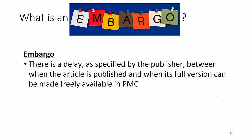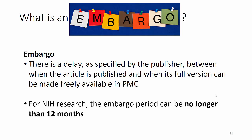This may be a term that's a little bit new for people: what is an embargo? The embargo is a delay between when the article is published and when its full-text version can be made freely available in PubMed Central. For NIH research, that can be no longer than 12 months. When you go in to deposit a manuscript, you can set that embargo period. The time clock starts when the article is formally and officially published in that journal.